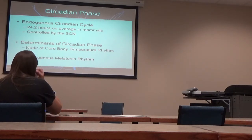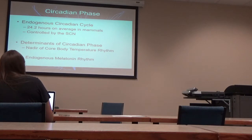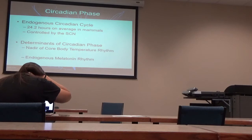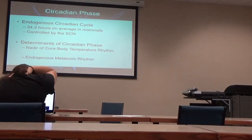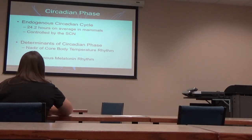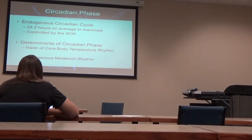The determinant of that circadian phase is actually the lowest core body temperature — the nadir of core body temperature. You're not running around measuring core body temperature on patients; it's not something you're going to actively order. But we can pretty well decide that everybody's nadir of core body temperature is at about the same time.